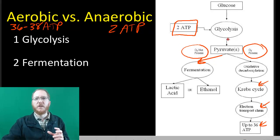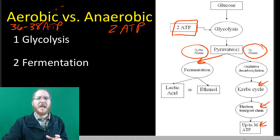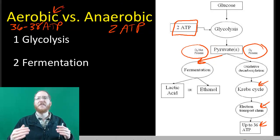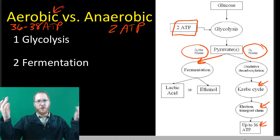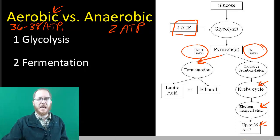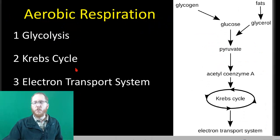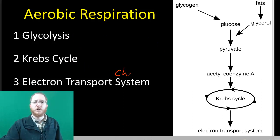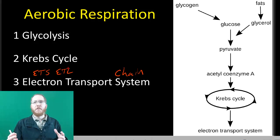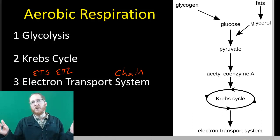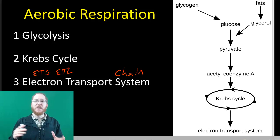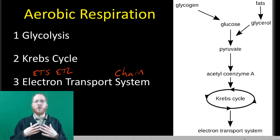These two pathways are not equivalent processes. They have different steps after glycolysis and produce vastly different amounts of usable energy. That's why most organisms will prefer to do aerobic respiration if they can. Anaerobic involves glycolysis and fermentation. Aerobic involves glycolysis, followed by the Krebs cycle, followed by the electron transport system — also called the electron transport chain, abbreviated ETS or ETC. Both abbreviations are equivalent for our purposes.